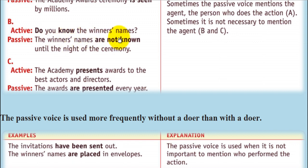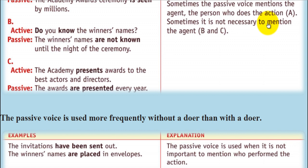Example B. Active: 'Do you know the winner's name?' Passive: 'The winner's names are not known until the night of the ceremony.' Sometimes it is not necessary to mention the agent. 'Are not known' — by whom? We don't say.